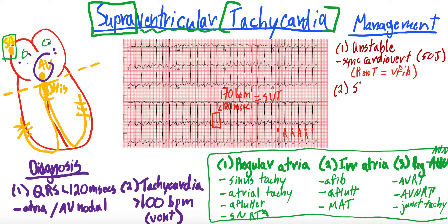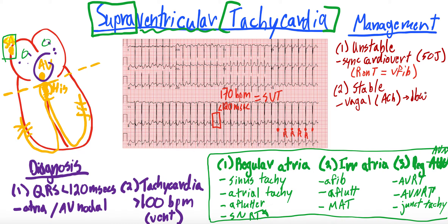For stable patients with supraventricular tachycardia who are doing okay hemodynamically and symptomatically, the first thing you can try is a vagal maneuver. The heart is innervated by the vagus nerve, which gives acetylcholine. Acetylcholine is parasympathetic and causes depression of the rate of the heart. By stimulating the vagal nerve, you stimulate that parasympathetic circuit and hopefully slow down the heart. You can do this with various vagal maneuvers — often blowing into a syringe is one that we do.